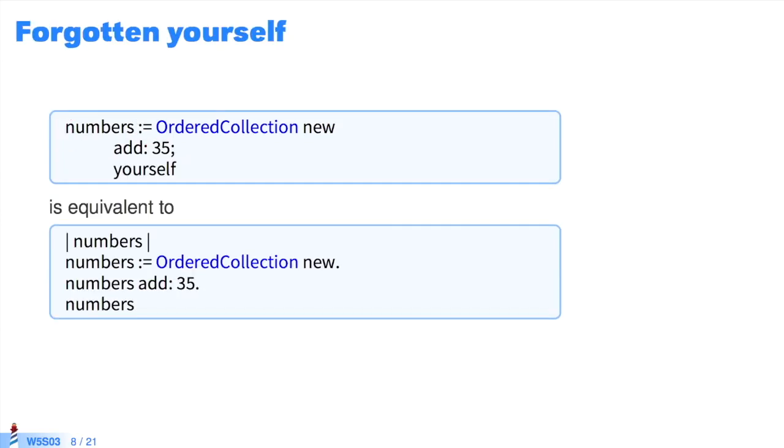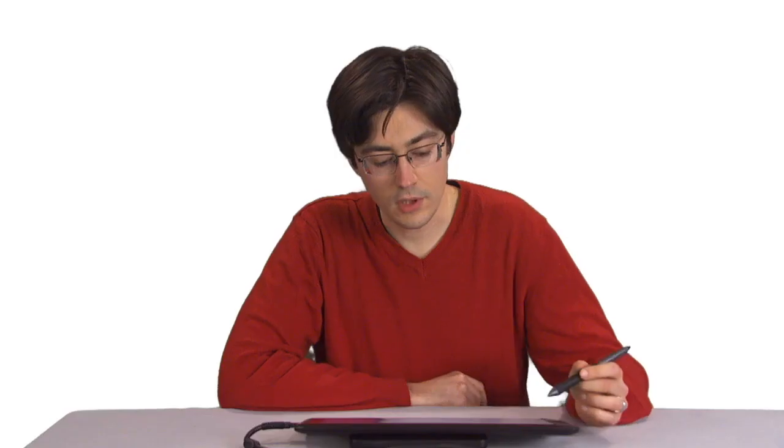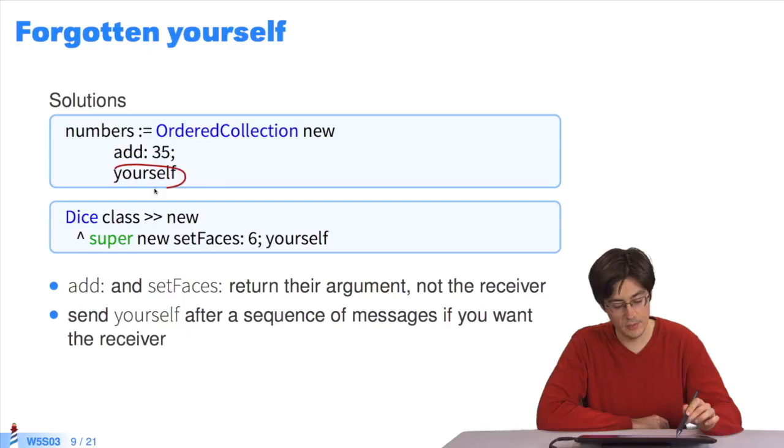If we look more closely, adding yourself after add will correct the problem. Why? Because add returns its settings. So, ordered collection new add 35 returns 35. If we add the string to yourself, we're sure to get the receiver at the end, and numbers will be a collection of numbers. So, the solution here is to add yourself at the end of each message.